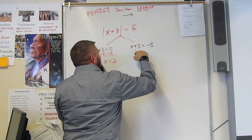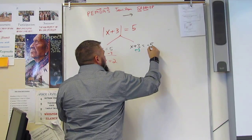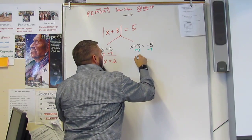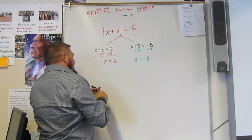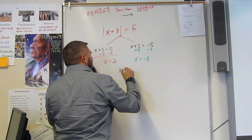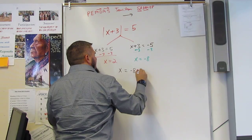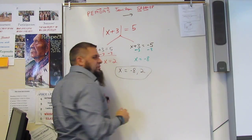And minus 3, minus 3, and I get x equals negative 8. So my final answer is x equals negative 8 and 2. So I have two solutions.